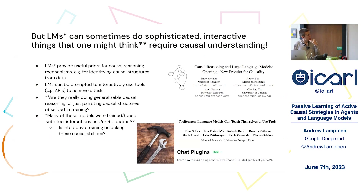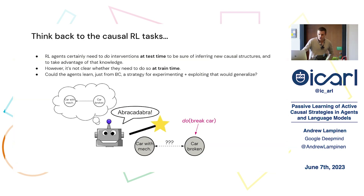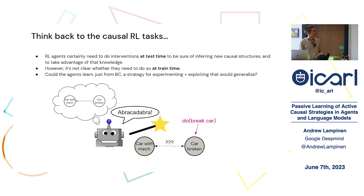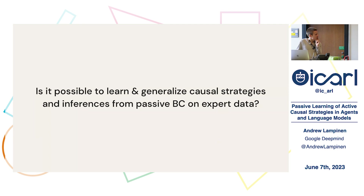I was thinking about the tension between the passive training of language models and these more exciting results. Language models are mostly passively trained, so why do they show some behaviors that seem causal? This made me think back to classic causal RL meta-learning tasks. I realized that while RL agents need to be able to intervene at test time, it's not obvious they would need to do that at training time. I wondered whether agents could learn just from BC — like a pure language model — how to discover a strategy for experimenting and exploiting a causal structure that would generalize.